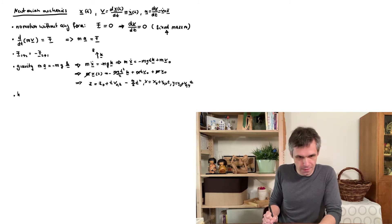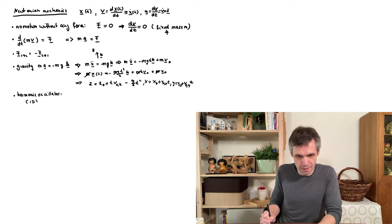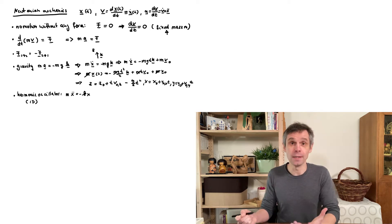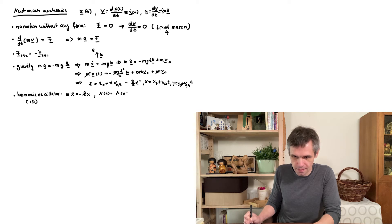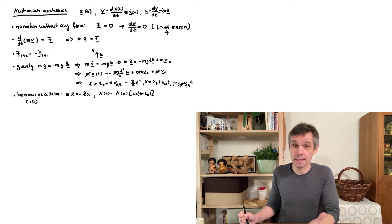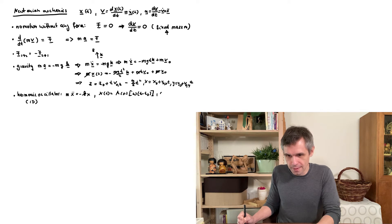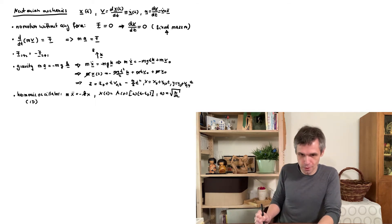Now another example would be the harmonic oscillator, which I'm just going to specify in one spatial dimension. So there you have a force which is pointing back to an equilibrium position. And this is solved by some oscillating functions with an amplitude a and a time t0 which is just a time where the displacement is maximal. And omega, the angular frequency of the oscillation, is given by this expression here. And you can check this by simply inserting this into the equation of motion.